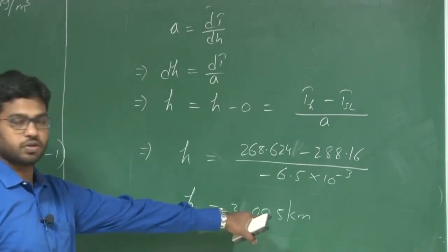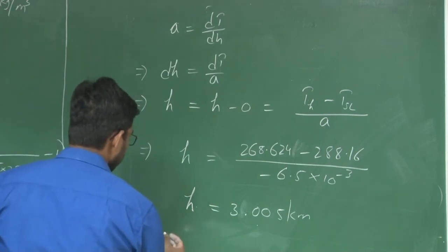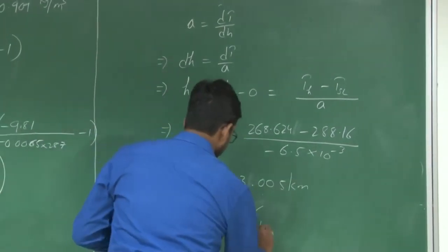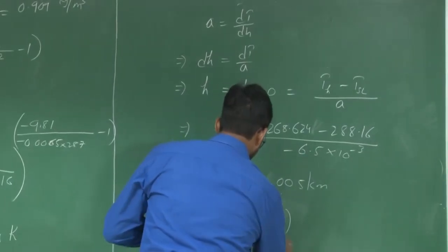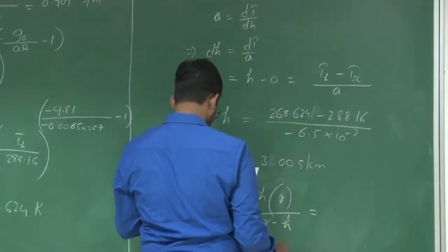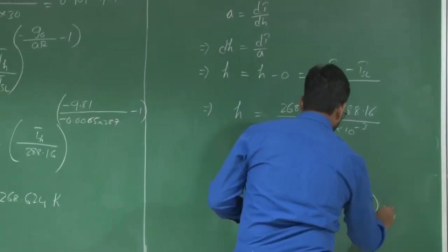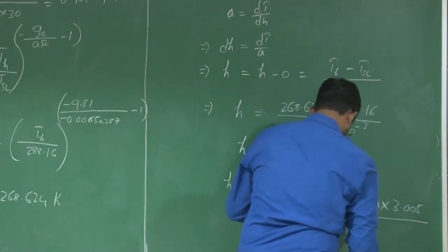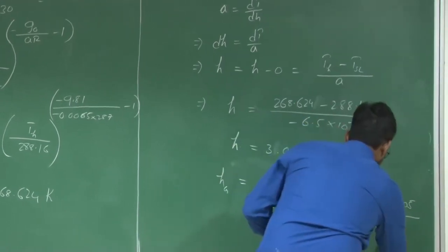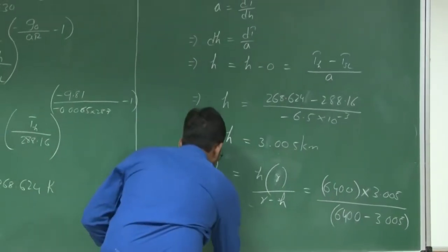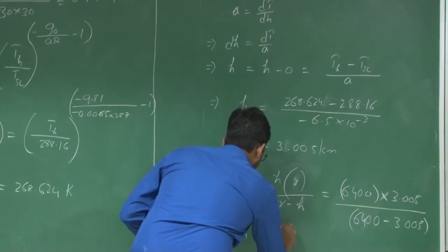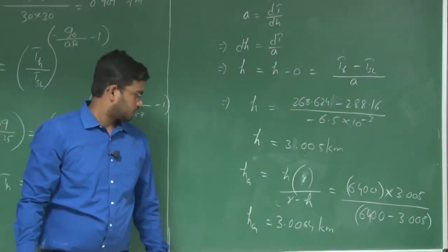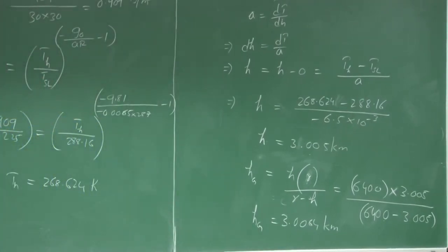The geopotential altitude h is 3.005 kilometers. The corresponding geometric altitude H_g equals h times R divided by (R minus h), which is 6400 times 3.005 divided by (6400 minus 3.005). H_g equals 3.0064 kilometers. So the aircraft is approximately flying at 3006 meters. The altitude of flight is approximately 3 kilometers, and the difference between geometric and geopotential altitude is very, very small here.